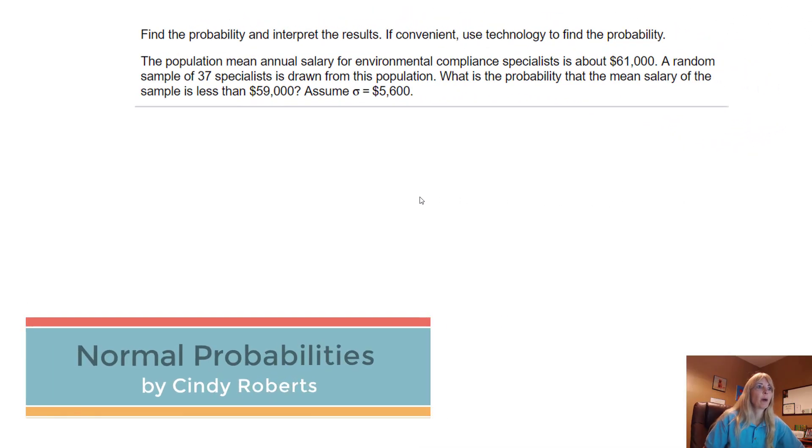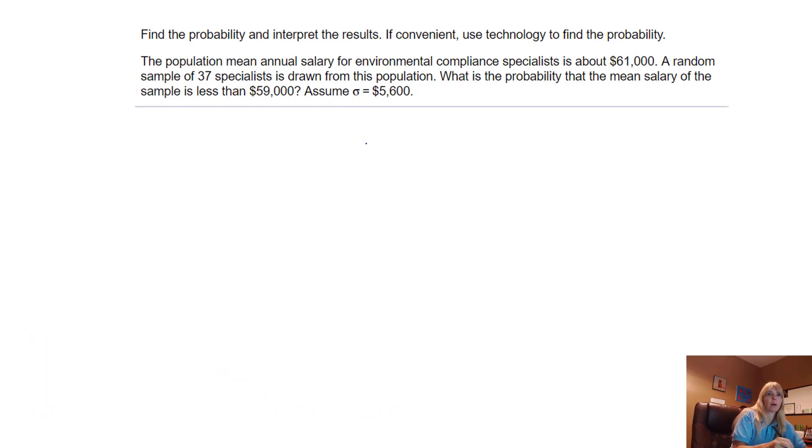Okay, so we have a problem here that says find the probability and interpret the results. The population mean annual salary for an environmental compliance specialist is about $61,000. So the population mean μ is $61,000.